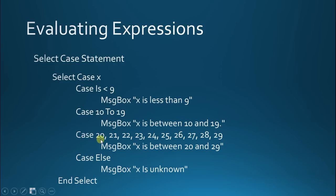Down here we have a little different syntax. Notice that I've got everything comma separated. And what this is, is think of the comma as an or. So, what we're saying is, is x 20, or 21, or 22, or 23, or 24, or 25, or 26, etc. If it's any of those values, if x is any of those values, it's going to pop up message box x is between 20 and 29.